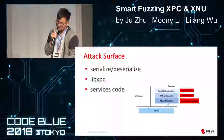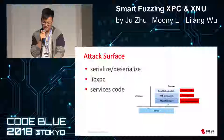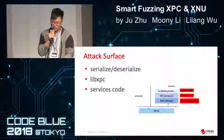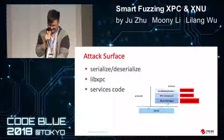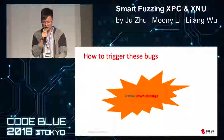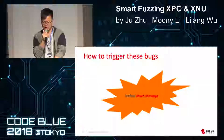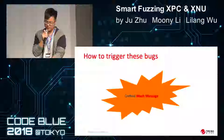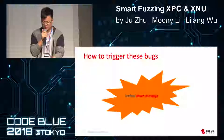However, can we ensure that the data is processed correctly in all these steps? Obviously not. Many vulnerabilities related to these three stages have been disclosed — for example, you can search XPC in the project zero issues. The main issue is that the mechanisms cannot parse or process malformed messages correctly. Therefore, the main goal for us to trigger a potential bug is to corrupt or send malformed messages.